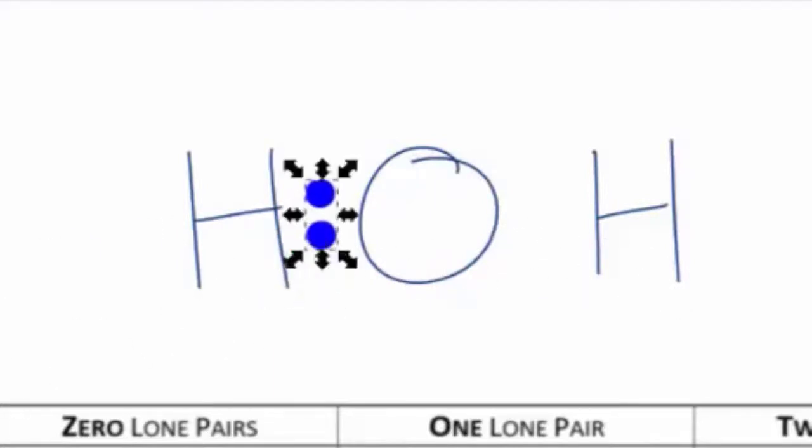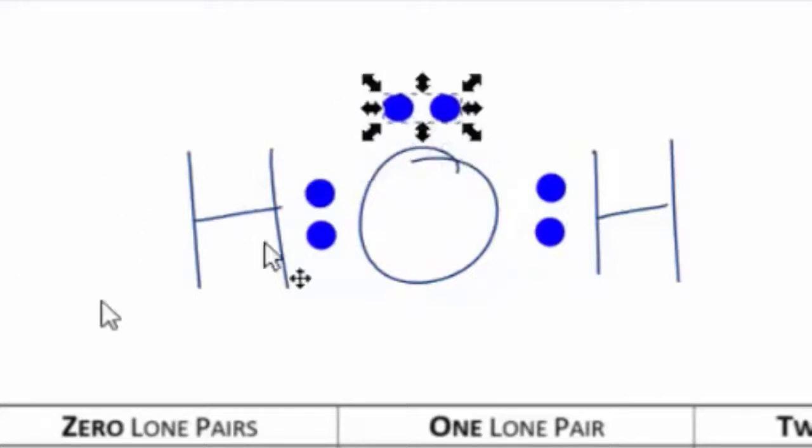We'll put two between the atoms here to form the chemical bond. So the two hydrogens are bonded to the oxygen. Next, we'll put two around the central oxygen. So now the hydrogens each have two. Their outer shells are full. The oxygen has an octet.